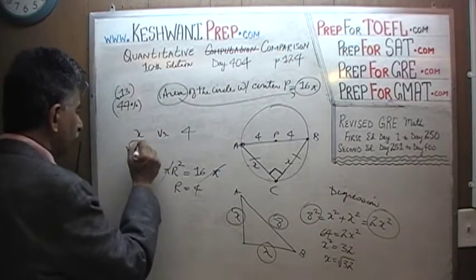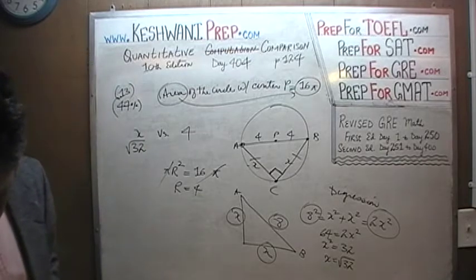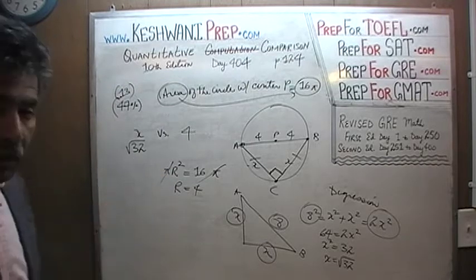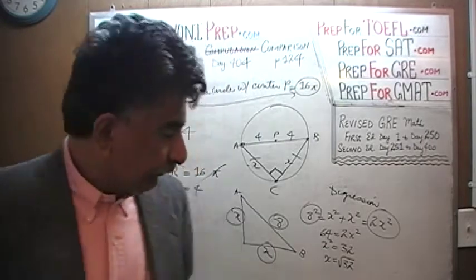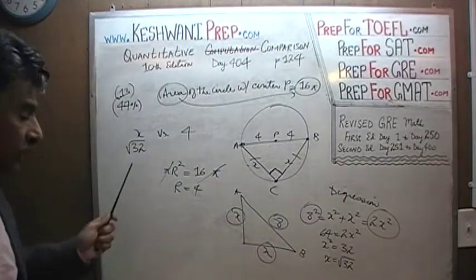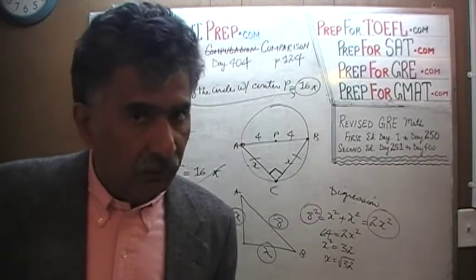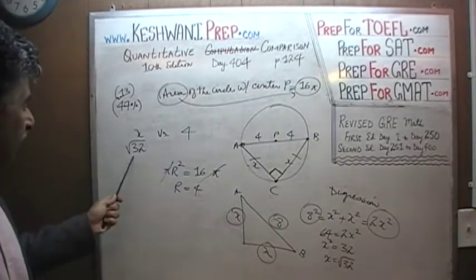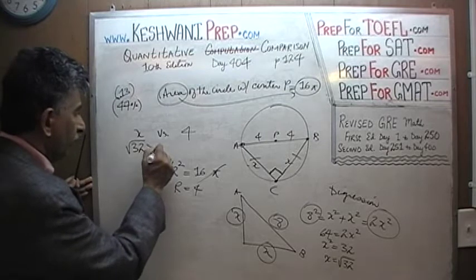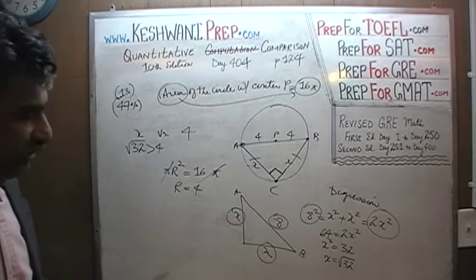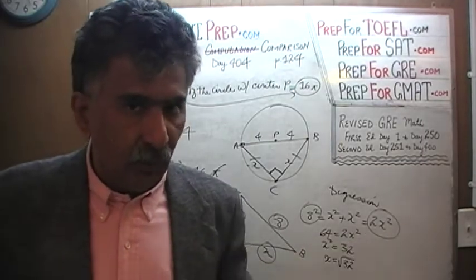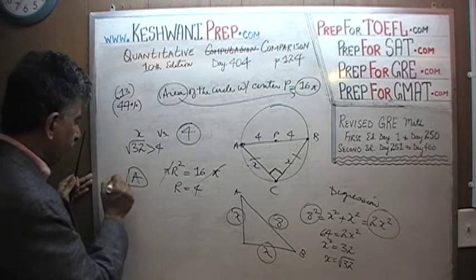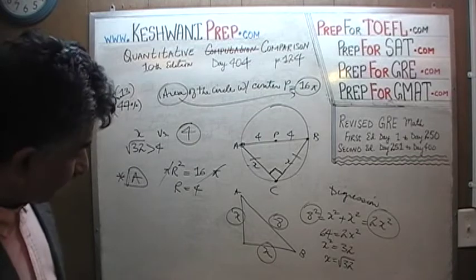So X equals the square root of 32. We have to figure out how it compares to 4. How are we going to compute the square root of 32? That is the whole point — we don't have to compute anything. These questions are called quantitative comparison, not quantitative computation. All we have to realize is that the square root of 32, whatever it is, is more than 4. Because the square root of 16 is 4, and since 32 is greater than 16, the square root of 32 is more than 4. So this quantity is more than 4, and the answer is A.